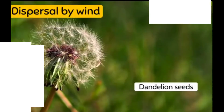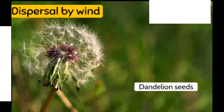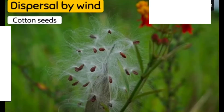Dispersal by wind: Some plants have very small and light seeds. These seeds also have wings or hair. When wind blows, they are easily carried away from the parent plant. Examples: madar, dandelion and cotton seeds are dispersed by wind.